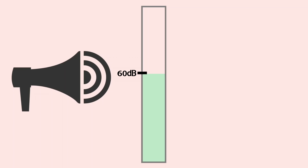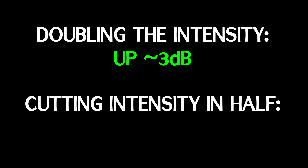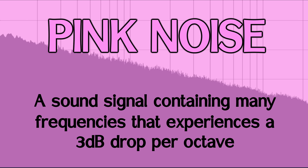Speaking of volume — decibels are weird. They operate on a logarithmic scale: if you take a sound at a certain decibel level and increase its volume by 10 dB, you've ended up with a sound that's 10 times more intense. Go up another 10 dB and your sound is 100 times more intense than the one you started with. The math is a little weird, but if you think about doubling the intensity or cutting it in half, what you're really talking about is going up or down roughly 3 dB. So a good working definition of pink noise is a sound signal containing many frequencies that experiences a 3 dB drop per octave.